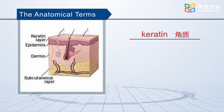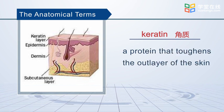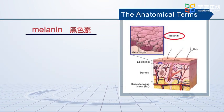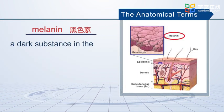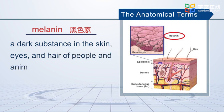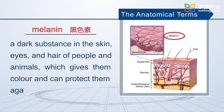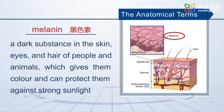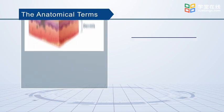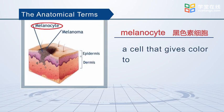Keratin is the protein that toughens the outer layer of the skin. Melanin is the dark substance in the skin, eyes, and hair of people and animals, which gives them color and can protect them against strong sunlight. Melanocyte is a cell that gives color to the skin.